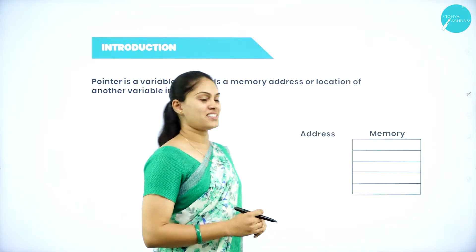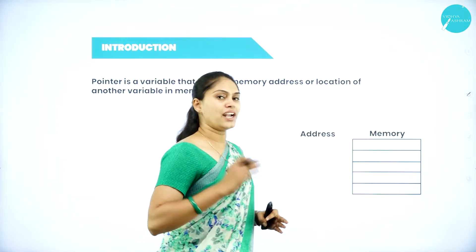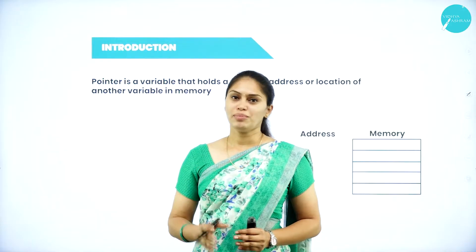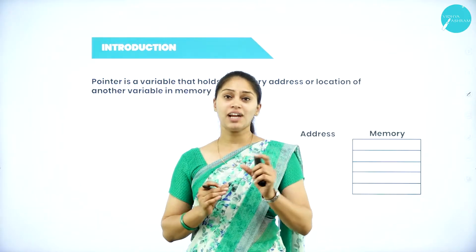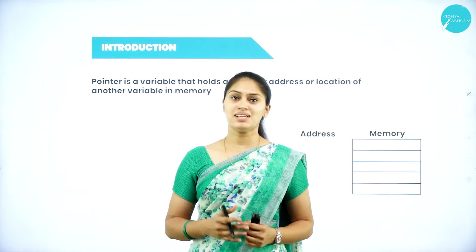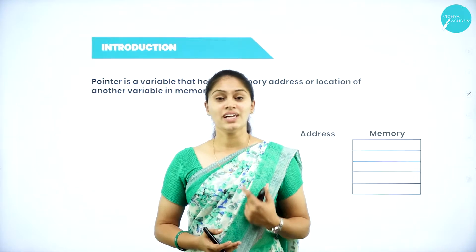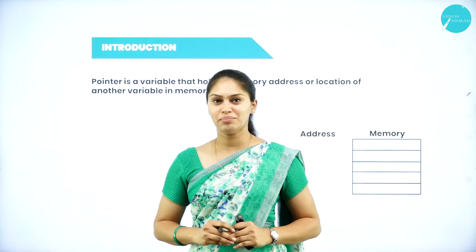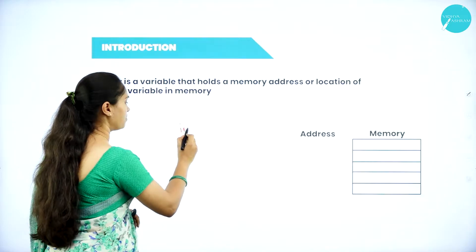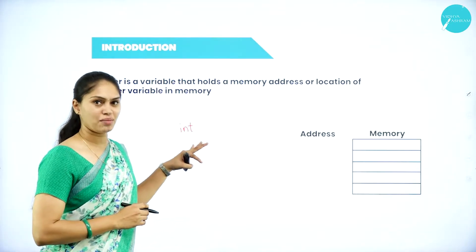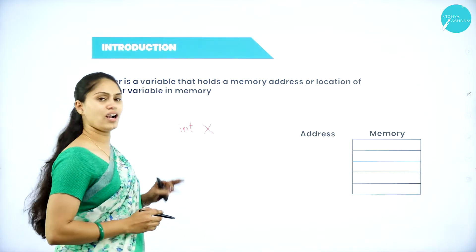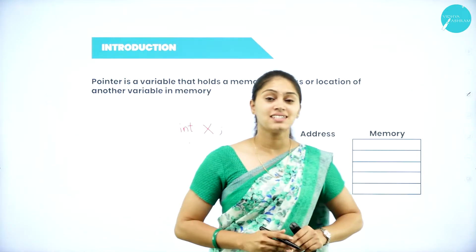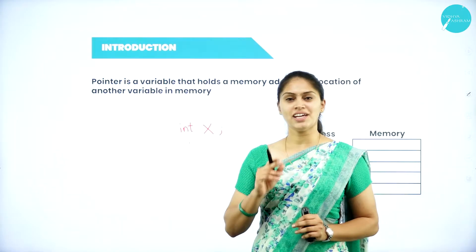Before getting into what a pointer is, let me review how memory allocation works. I want you to think about creating one variable. A variable is a value which can be changed — it is also one of the identifiers. The syntax to declare a variable is: data type, then variable name. For example, I take data type int and variable name x, followed by a semicolon. This indicates the declaration of the variable called x.